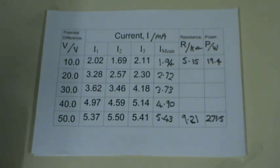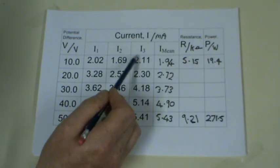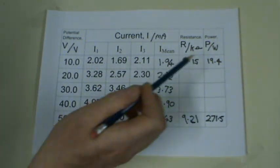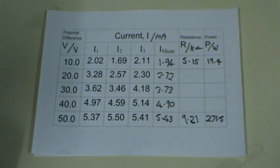In exams, they will usually ask you to calculate the uncertainty or percentage uncertainty for one row of data. They usually won't expect you to complete a column in your table with all the uncertainties.